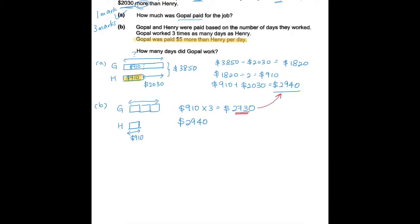So we're going to subtract it now. $2,940 because that is what he was actually paid, minus $2,730. That would give me $210. So remember, every day he was paid $5 more than Henry. So I'm going to divide this to get 42 days. So this would be my answer.